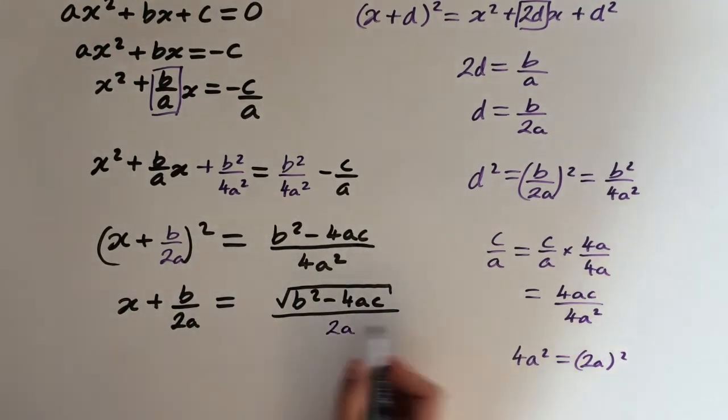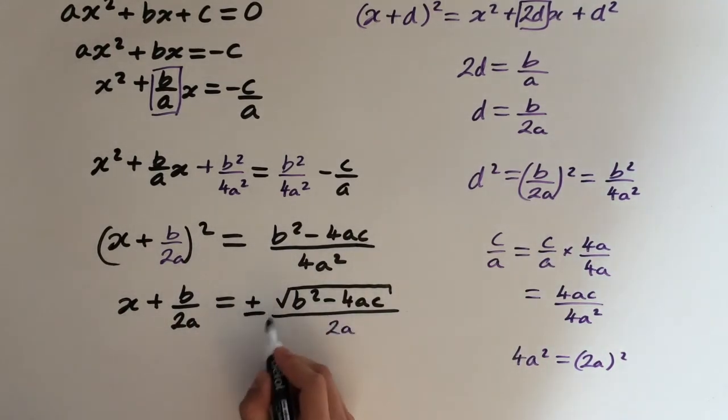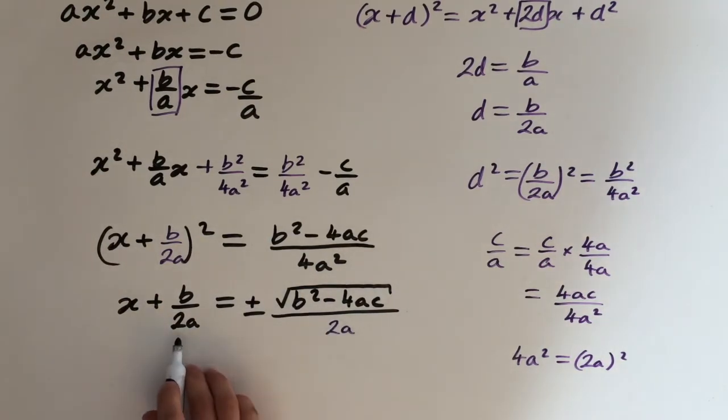But be careful because we need to add a plus or minus sign, because this will give us the two solutions we want from the quadratic formula. And quite nicely, both of these fractions have 2a as a denominator. So if we subtract b over 2a from both sides, we can just write it all over one fraction. And this is the last step.